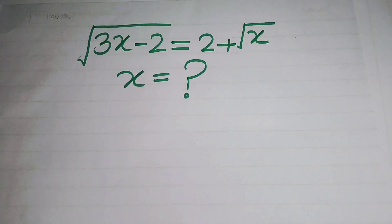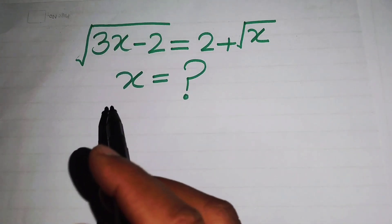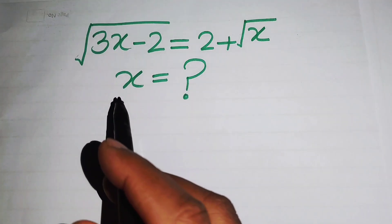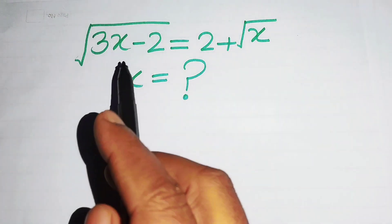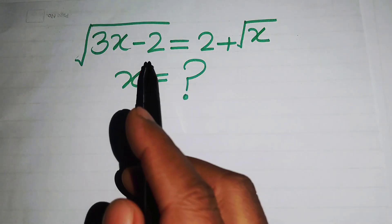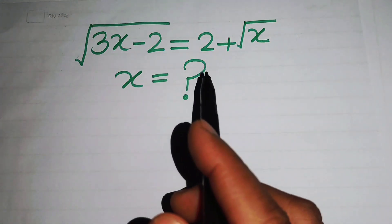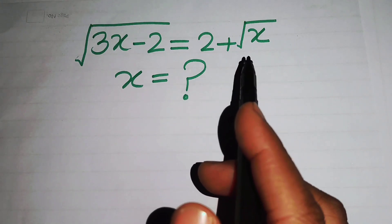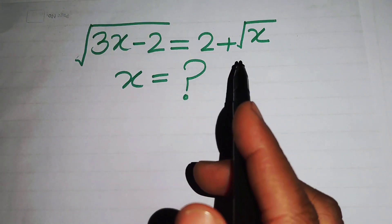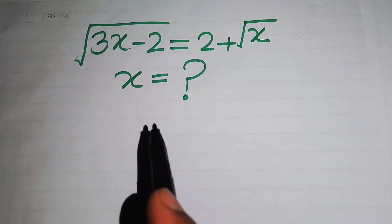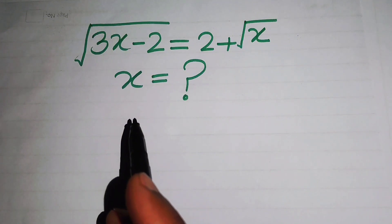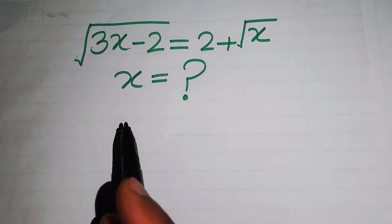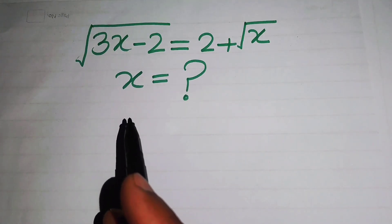Hello everyone, welcome. We will solve this math algebra problem: the square root of (3x minus 2) equals 2 plus the square root of x. We will solve for the values of x.